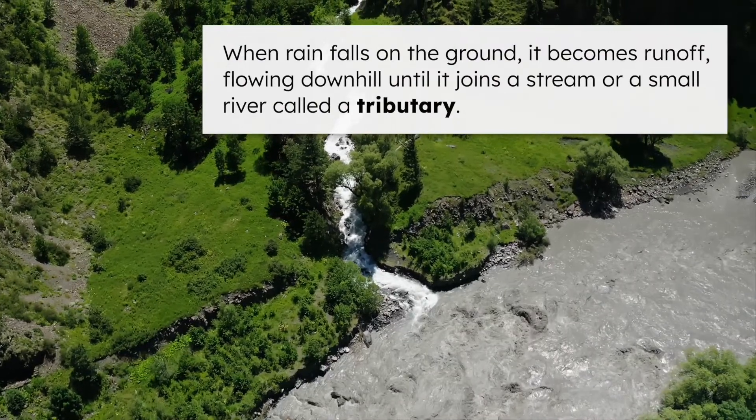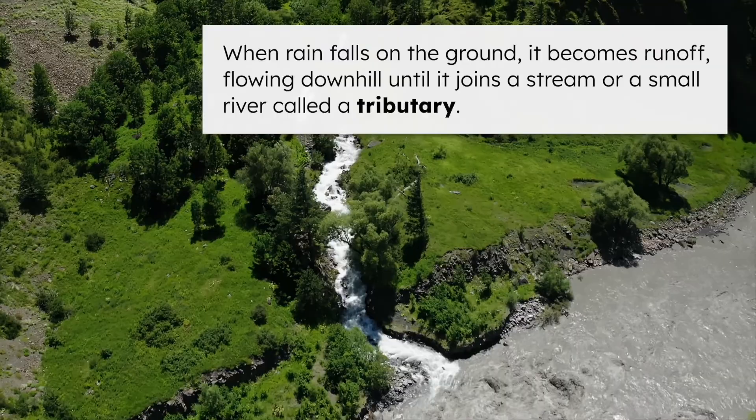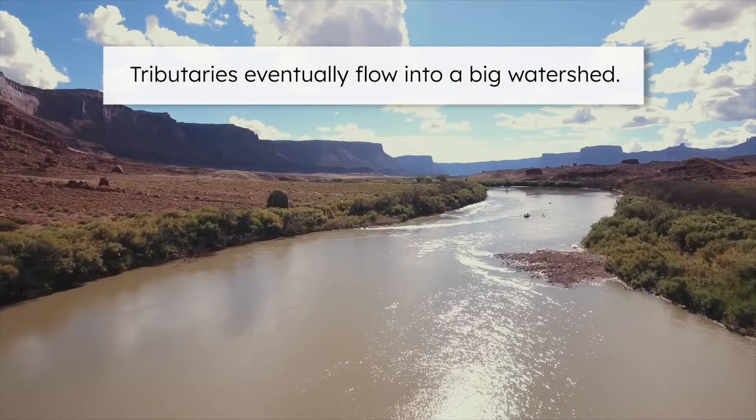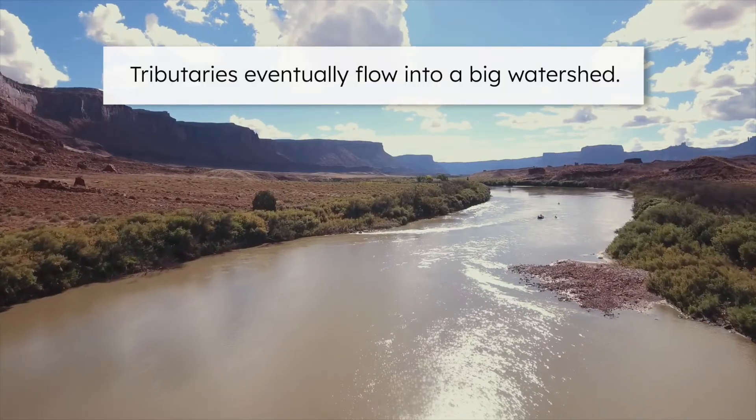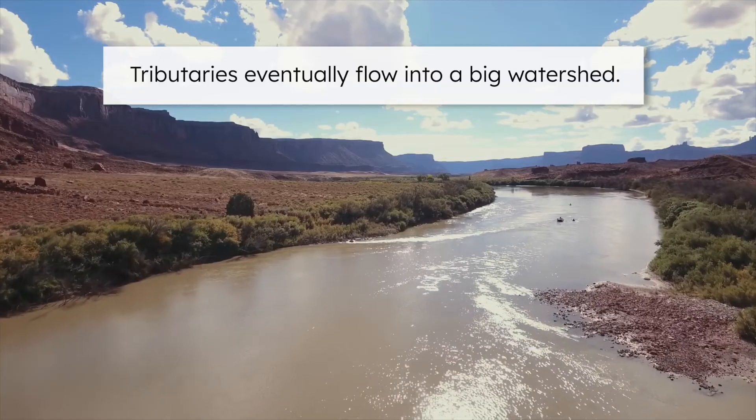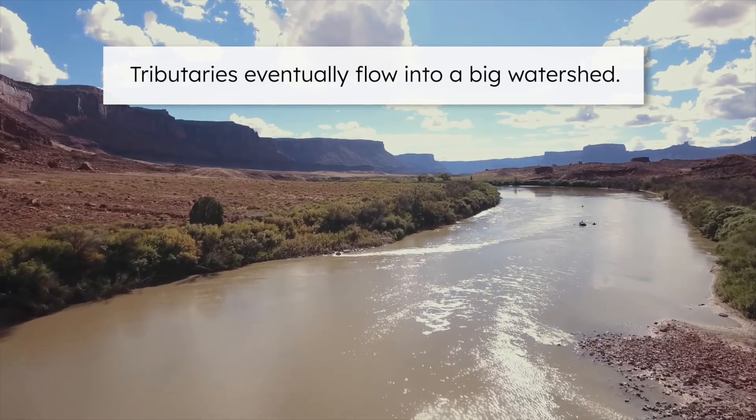When rain falls on the ground, it becomes runoff, flowing downhill until it joins a stream or a small river called a tributary. These streams and tributaries eventually flow into a big watershed, like the Colorado River. In fact, the Russian Colorado River is actually fed by tributaries that carry water from parts of seven different states.